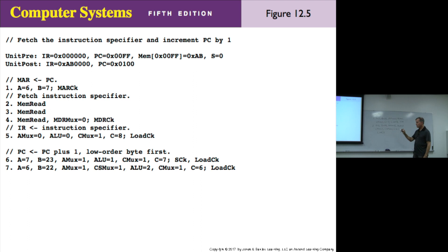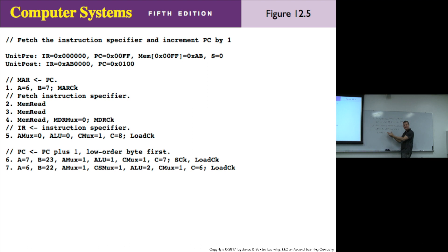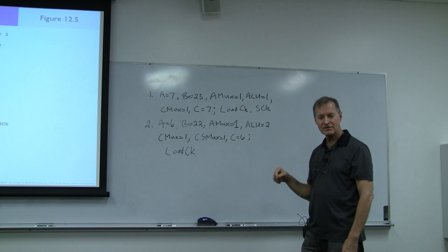This is figure 12.5. Checking our work against the figure — we have a small difference with the placement of the shadow carry clock, but since all comma-separated signals are concurrent, the order doesn't matter. Everything checks out. These two cycles turned out not to be cycles one and two, but cycles six and seven.